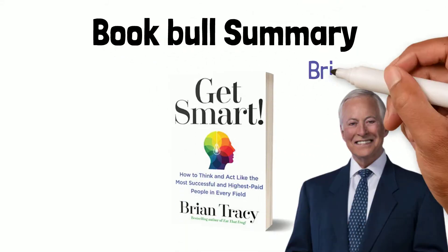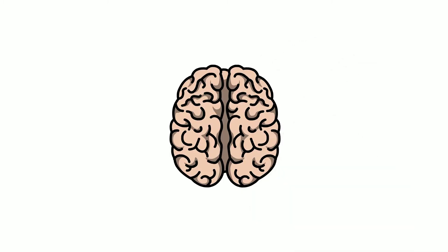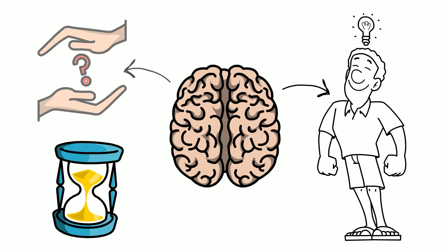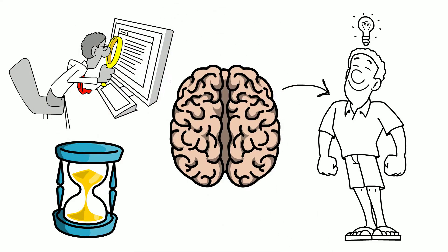This is a BookBulls summary of the book Get Smart by Brian Tracy. The human mind is a complex and brilliant thing. It has evolved over millions of years and is still the subject of much scientific scrutiny.